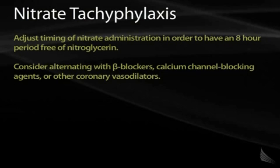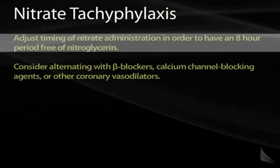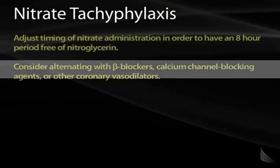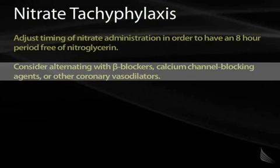This patient has developed nitrate tachyphylaxis, which is basically equivalent to tolerance — he's taking too much nitrate and it has become ineffective. The physician's job is to adjust the timing of his nitrate medication to ensure an 8 to 12 hour period free of nitroglycerin each day, allowing the body to reset itself. If the patient cannot do this, we should consider adding another medication for his angina, perhaps a beta blocker, a calcium channel blocker, or some other coronary vasodilator.